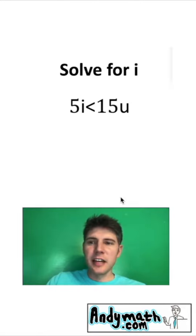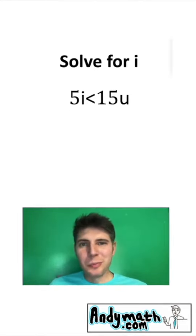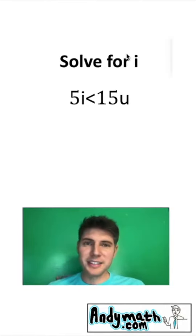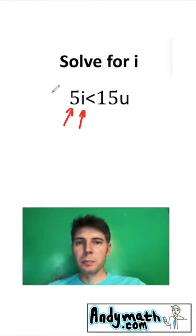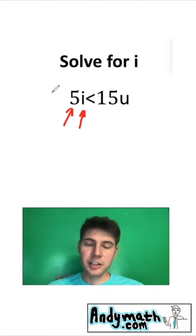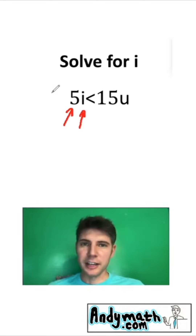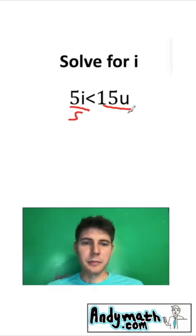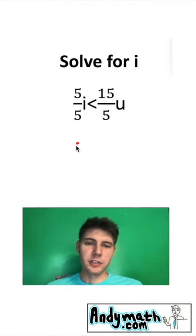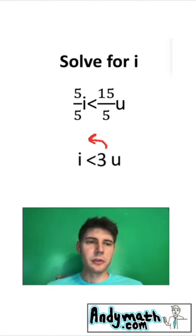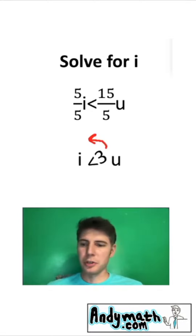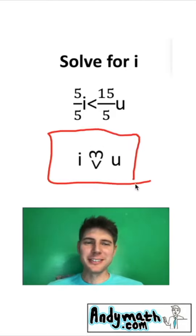Can you solve 5i is less than 15u? In order to solve for a variable, your goal is to get that variable by itself on one side of the inequality. The i is currently being multiplied by 5, so we perform the inverse operation by dividing both sides by 5. Then 5 over 5 is just 1, so this side is just i less than, and 15 over 5 is 3, with the u still there. So now we have i is less than 3u. If we rotate this 'less than 3' portion, it says 'I love you.' What a nice message!